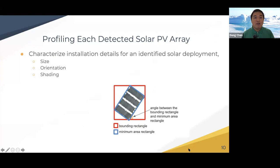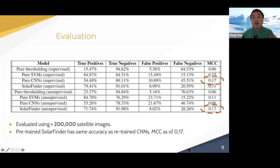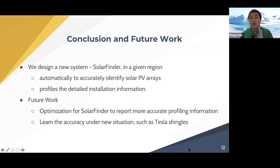Meanwhile, we also design a couple of estimators. We can report size, orientation, and tilt situations for each identified solar PV array. We also evaluate Solar Finder using a large dataset of over 200,000 satellite images, and we find that the pre-trained Solar Finder approach has actually very good accuracy. So we designed a system called Solar Finder that can automatically detect solar PV arrays given the region without extra cost, and we can also report the detailed installation information simultaneously.